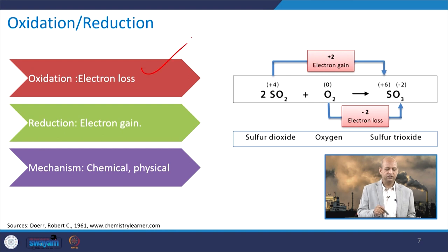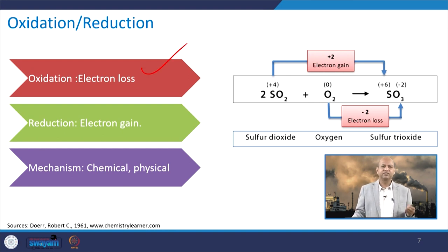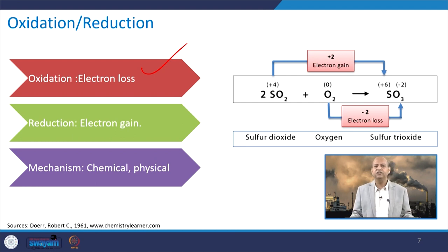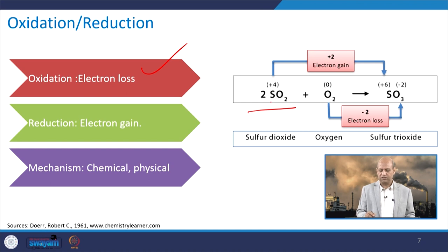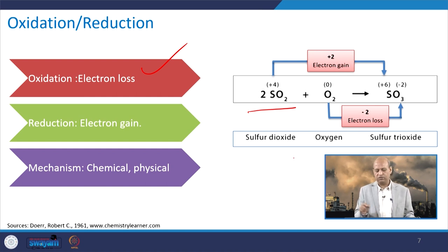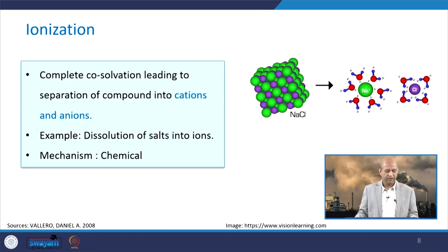Then oxidation and reduction: you can see sulfur dioxide is there. In oxidation, the loss of electrons is there; in reduction, electron gain is there. This whole mechanism is chemical and physical. The SO2 is giving electrons — electron loss of minus 2 — and SO3 formation is there. That way you can see this oxidation and reduction process in this particular reaction.